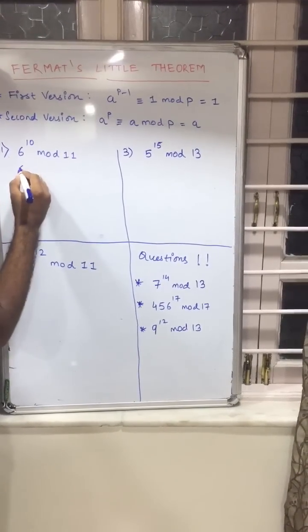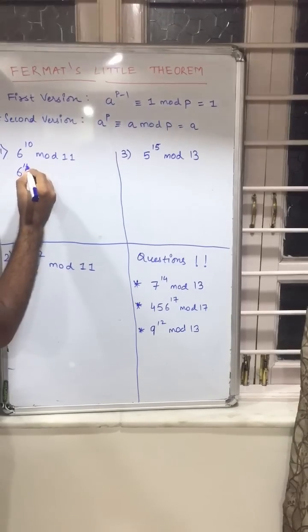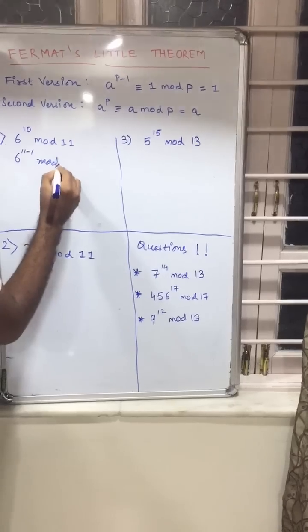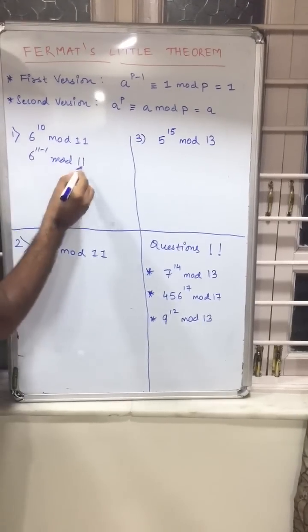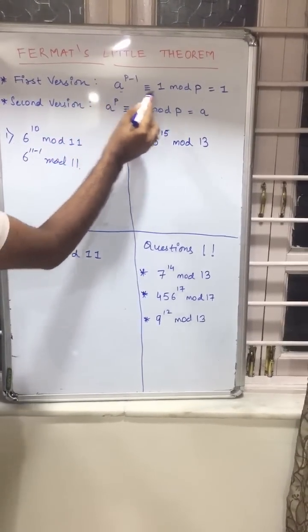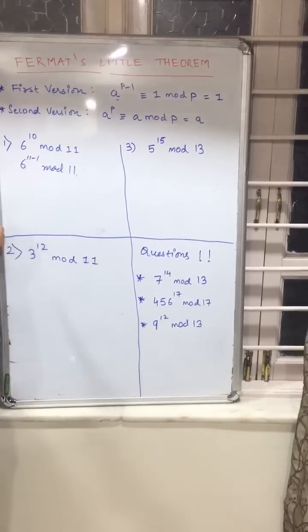So we can write it as 6 raised to 11 minus 1 mod 11, as 11 is prime, so we can surely say that this version matches this equation.